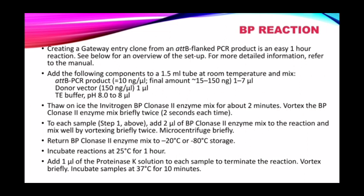For the BP reaction, we will create a gateway entry clone using an ATT-B flanked PCR product. It is an easy one-hour reaction. We will require a 1.5 ml tube at room temperature. We will take the ATT-B PCR product, a donor vector, and Tris-acetate buffer at pH 8 to 8 microlitres. Thaw on ice the Invitrogen BP clonase enzyme mixture for two minutes, then vortex the BP clonase enzyme mixture. Add this clonase enzyme mixture and mix the reaction by vortexing briefly twice. Microcentrifuge briefly. Return the extra BP clonase enzyme mixture to −20 to −80°C storage. Incubate the reaction at 25°C for one hour.